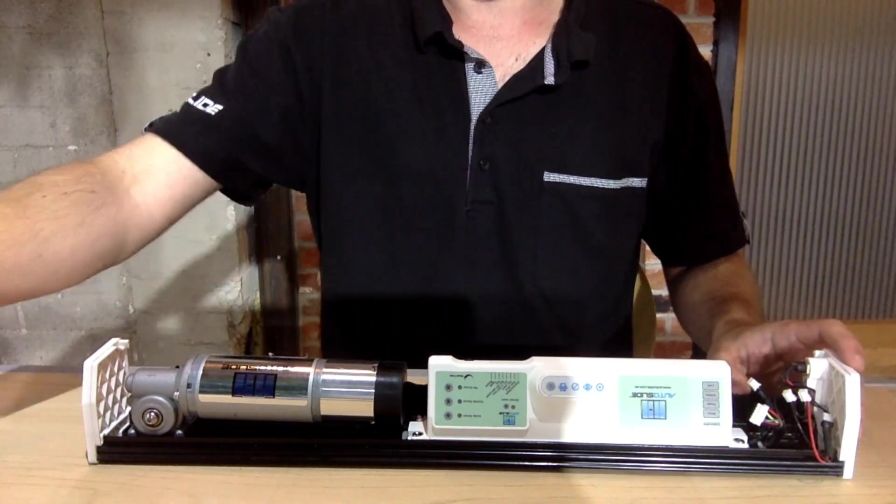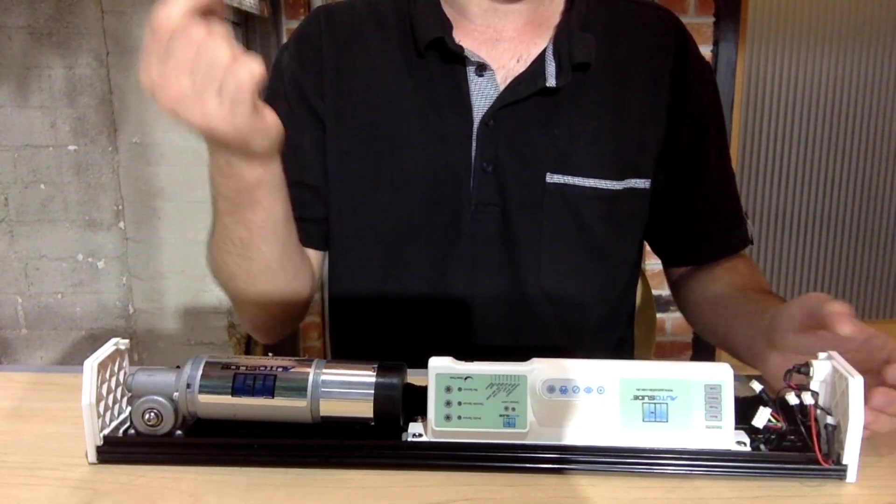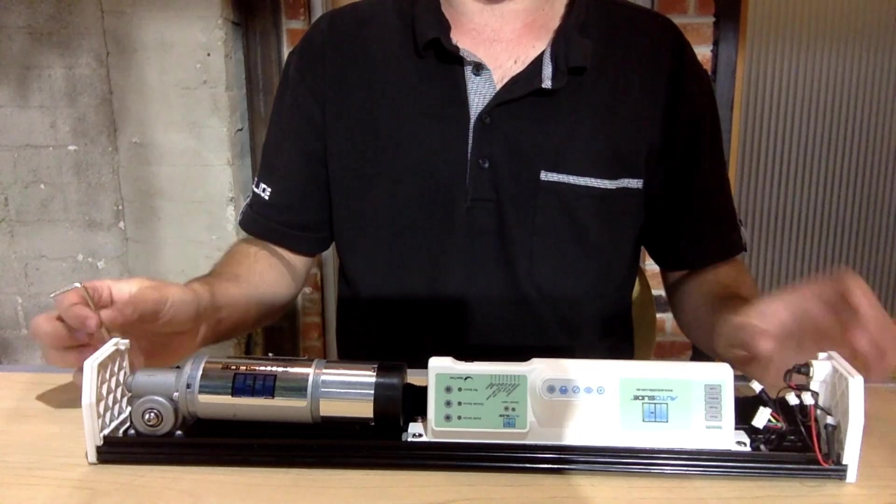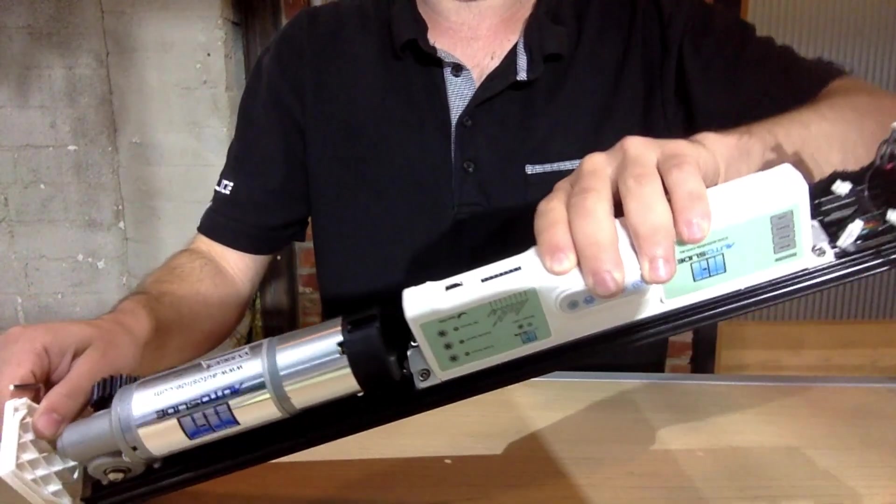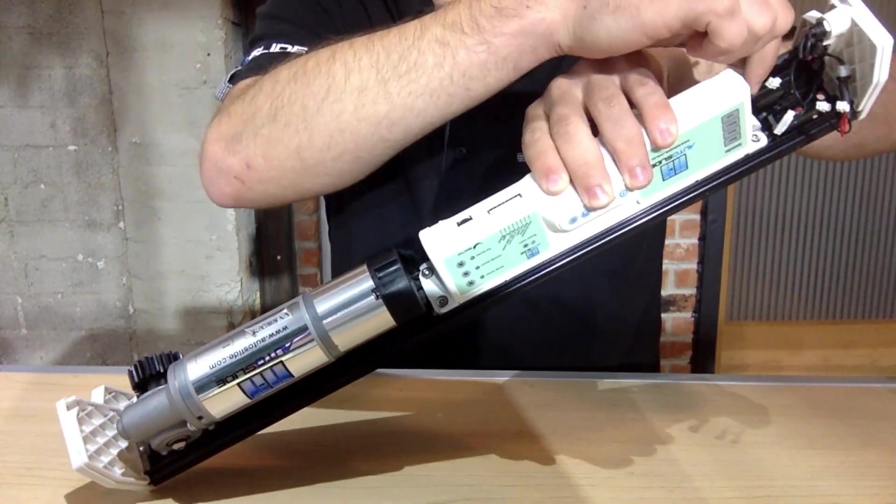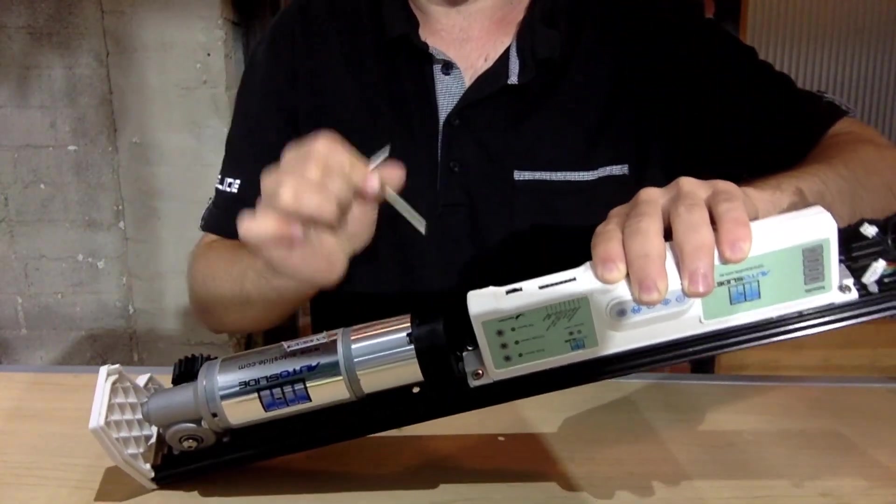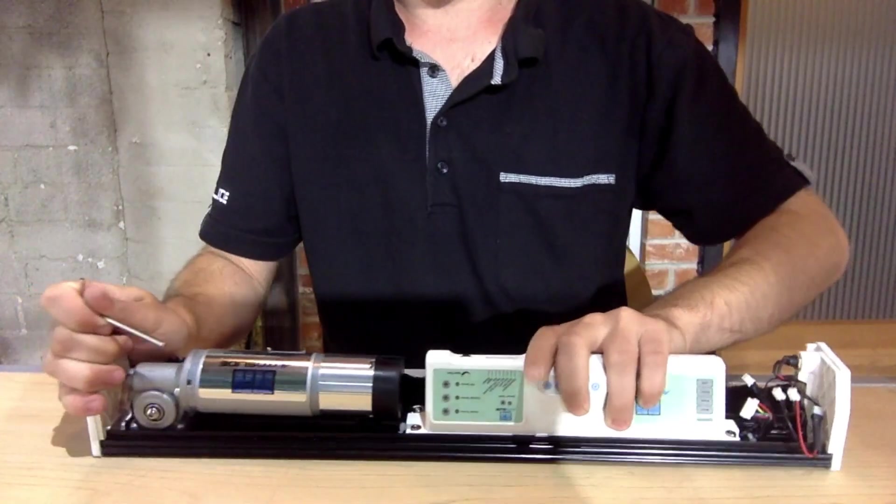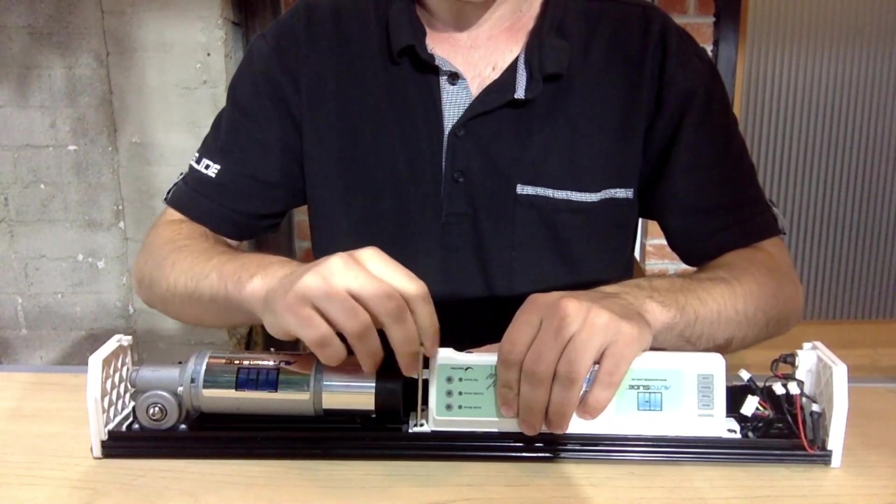Using an Allen wrench, the one we either provide with the kits that come with your autoslide or if you have one laying around the house, you simply find the Allen wrench screws located on the left and right side of your case. There's two here and two here. You simply just need to unscrew them and the case should come off easily. I've already unscrewed a few to save some time.